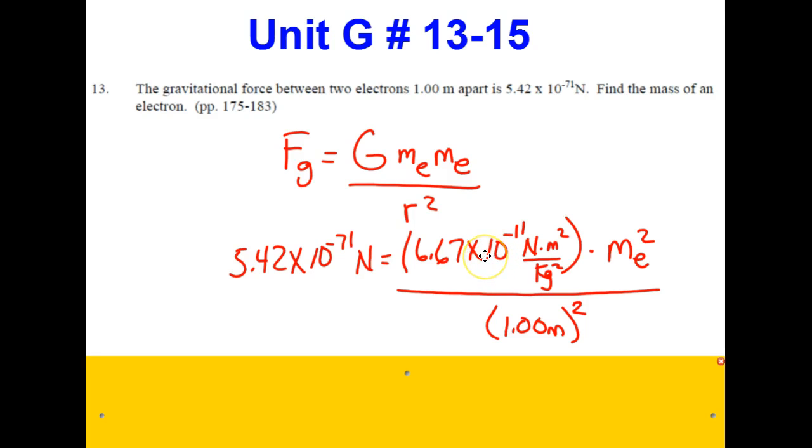And the key to this problem is that two electrons would be identical, so they have identical mass, and the mass of one electron times the mass of the other electron would be mass of electron squared. This allows us to easily solve the problem. Divided by the distance between their centers, which is one meter squared.